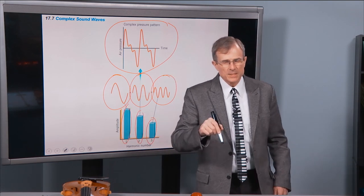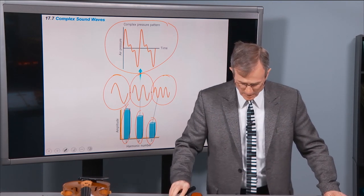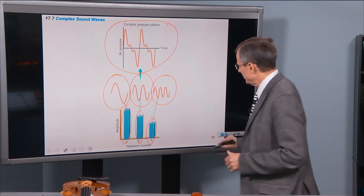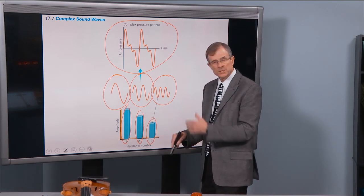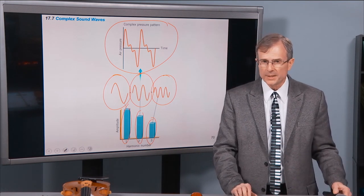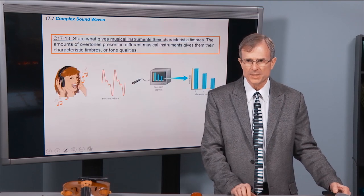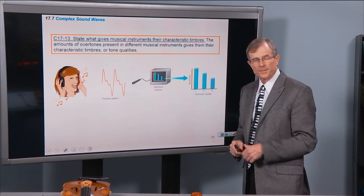And this is the reason why different instruments sound different. It's because the amounts of these different frequencies are different. And that's one reason why that violin doesn't sound like a clarinet. It's the presence or absence of the various amounts of these harmonics.